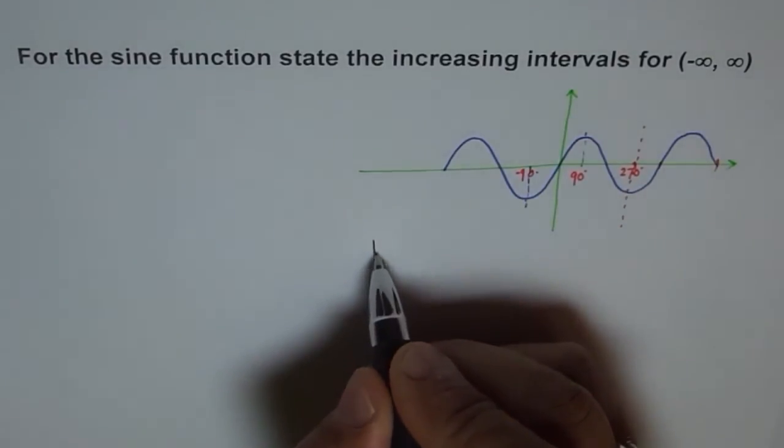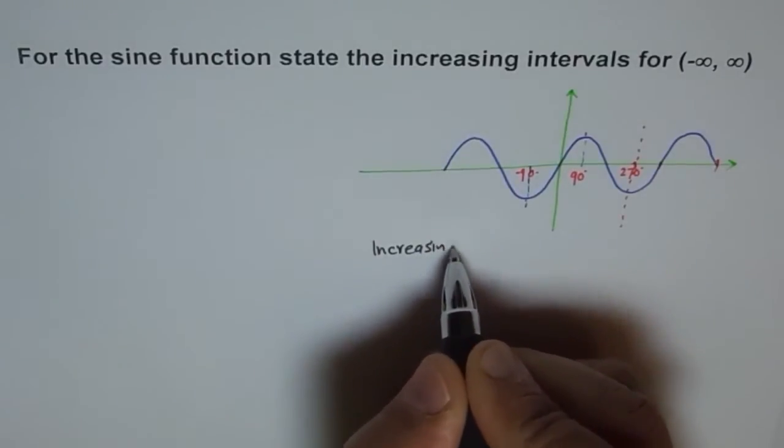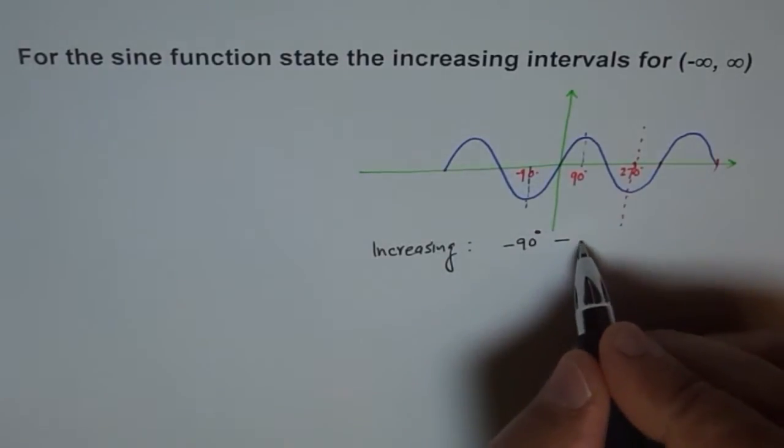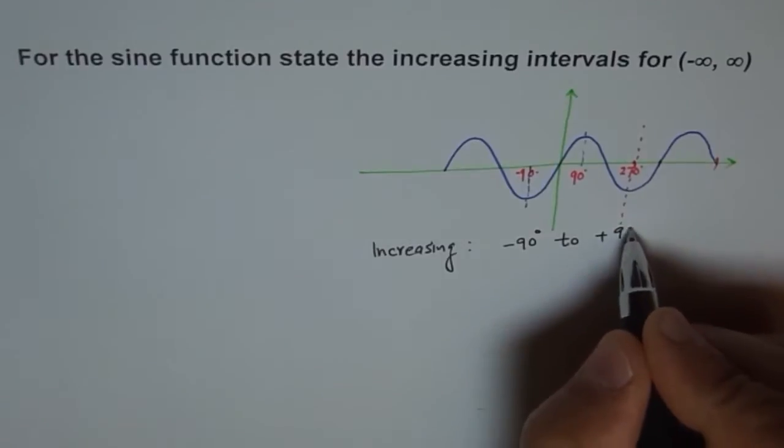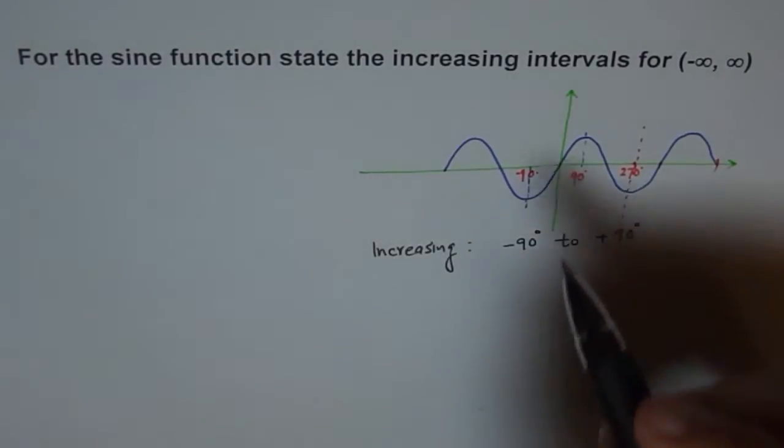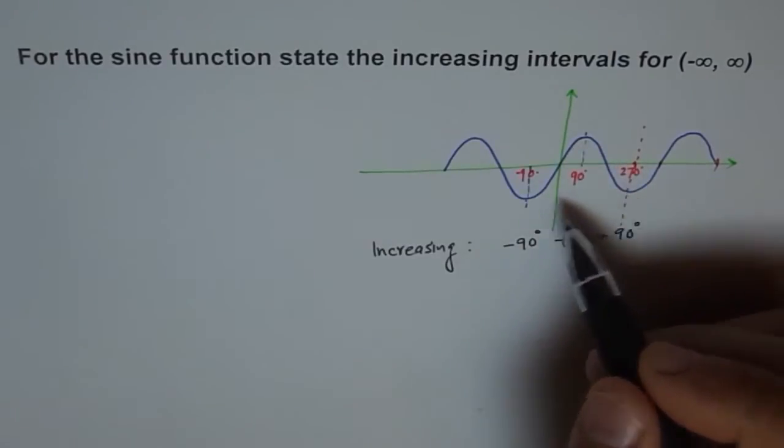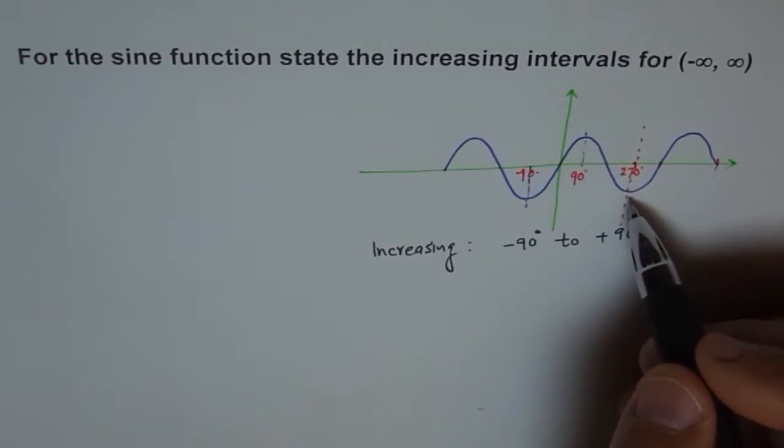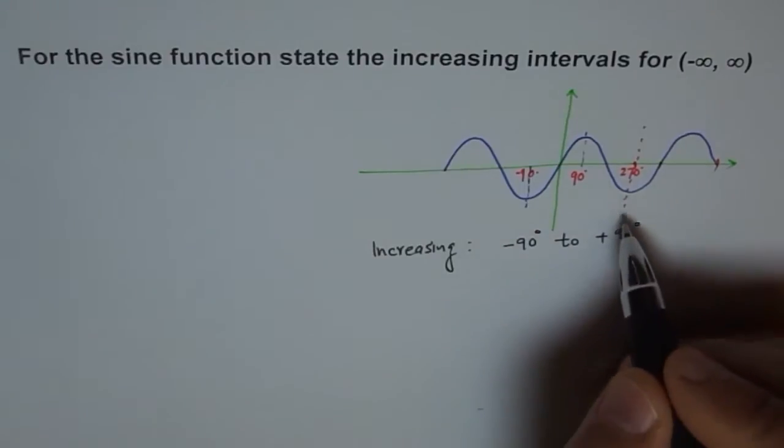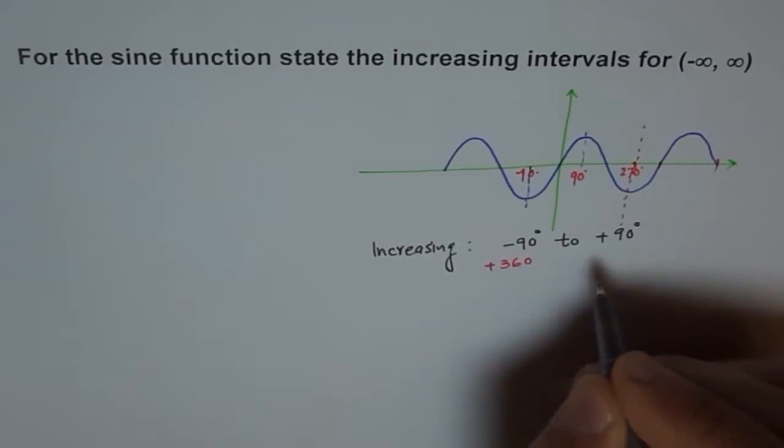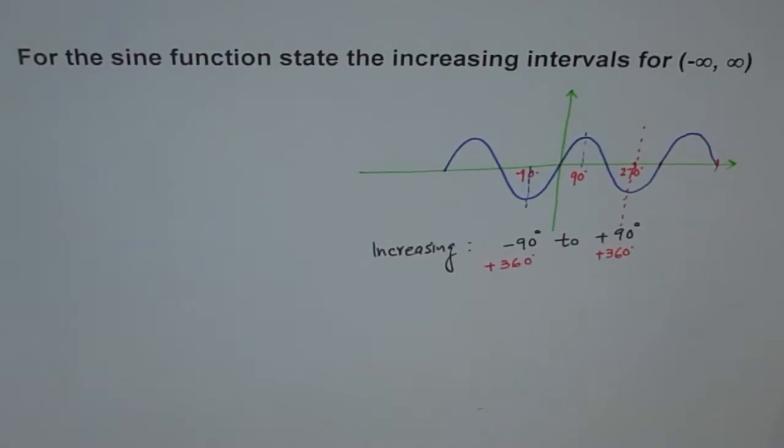So I can write increasing intervals. So that's my first interval. Now when does it increase later? Later it will increase by, because the time period of a sine function is 360 degrees. So from here to here, it should be plus 360 degrees. So if we add 360 degrees to each, you get the next increasing interval. Does it make sense?